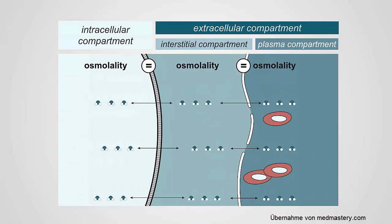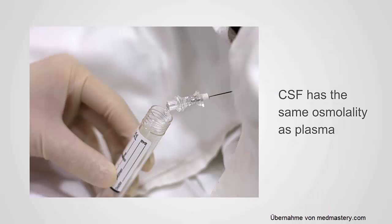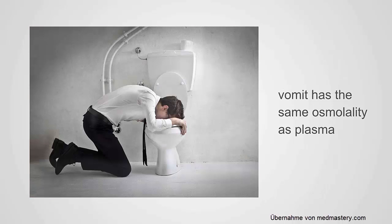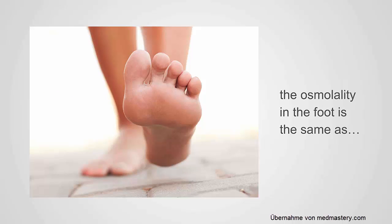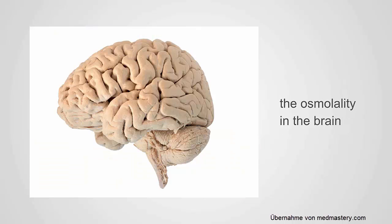These two membranes — the cell membrane and the capillary walls — are permeable to water. Water crosses across all three compartments with no restriction. This has tremendous implications for the body: the CSF has the same osmolality as plasma. If it didn't — if the CSF had a higher concentration than plasma — water would rush from the plasma into the CSF, neutralizing that concentration gradient. The same applies to vomit, gallbladder fluid, and indeed the osmolality in the foot is the same as the osmolality in the brain.